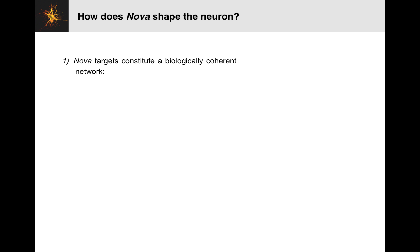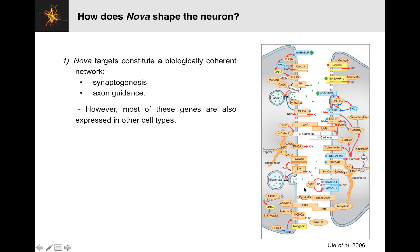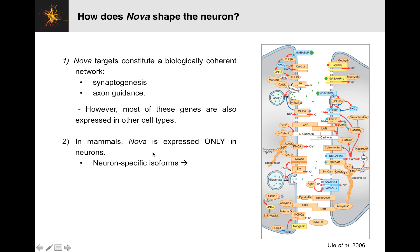How does this actually have a biological impact? NOVA targets a biologically coherent network — a bunch of genes that are involved in the same sorts of processes, in particular the genesis of synapses and guidance of axons. This is a bunch of NOVA targets shown here at the cell surface between neurons. Splicing is basically regulating the activity of this neural junction. Many of the genes making these proteins are also expressed in other cell types, but NOVA, by binding these transcripts and influencing their splicing, allows for neurospecific isoforms that lead to neurospecific proteins, giving us differences in proteins between neurons and other tissues.